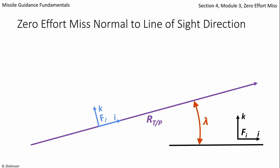And attached to the range vector now, which is along the line of sight direction, we're going to put a line of sight frame denoted with the cursive subscript L. The i direction is aligned with the line of sight direction, and the k direction is normal to it.